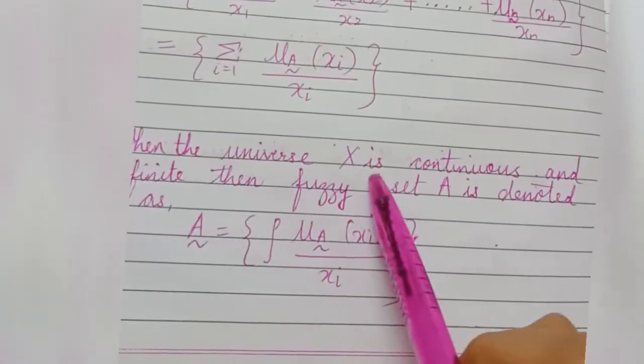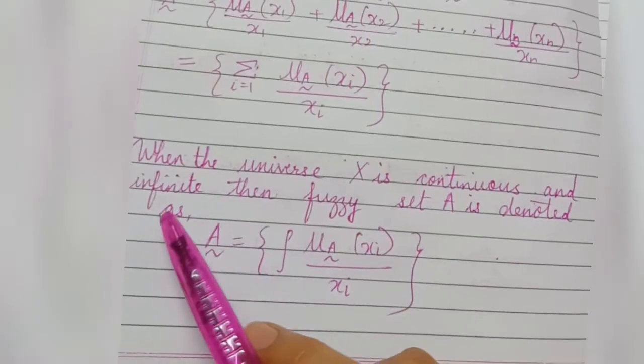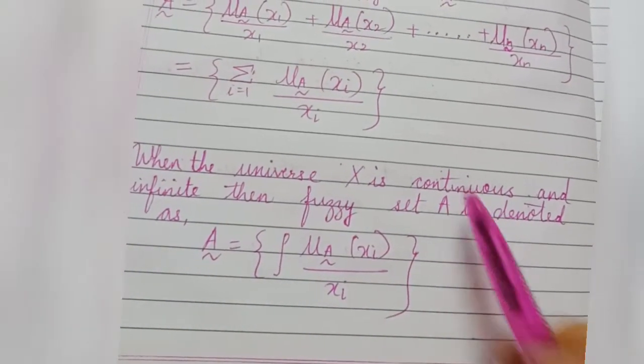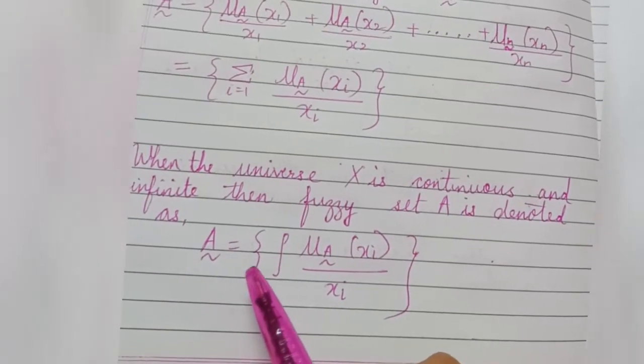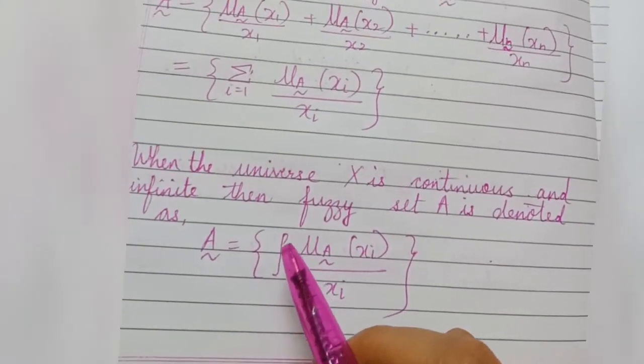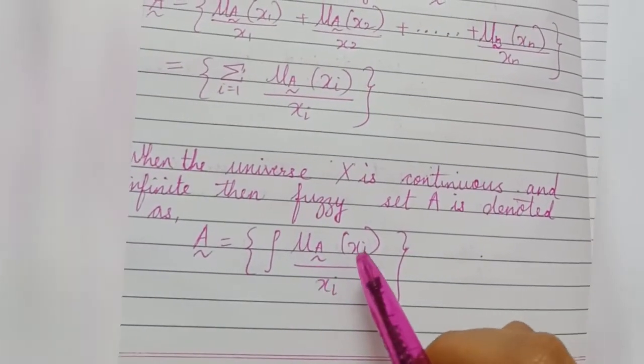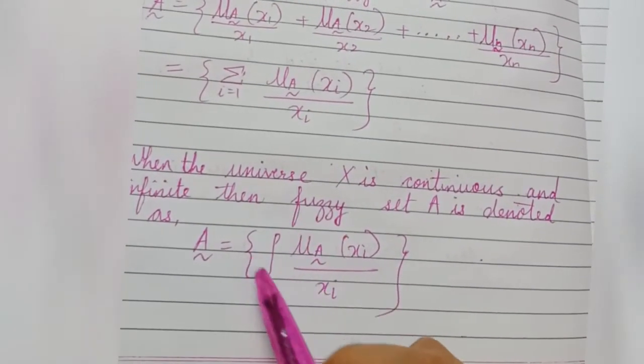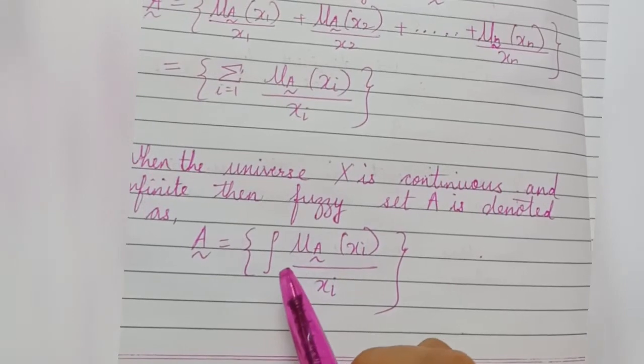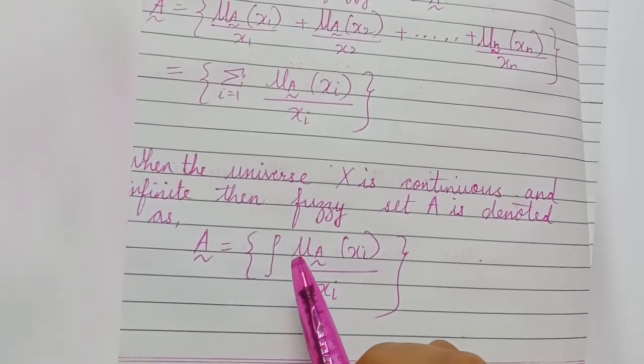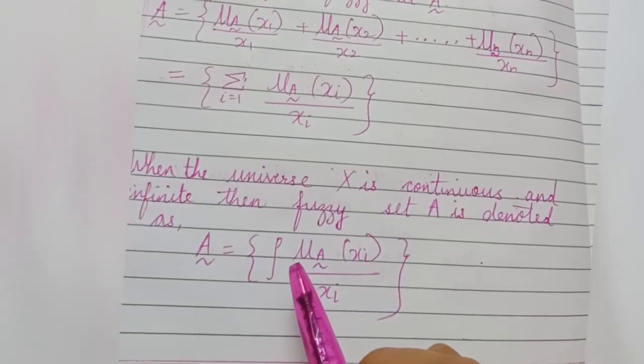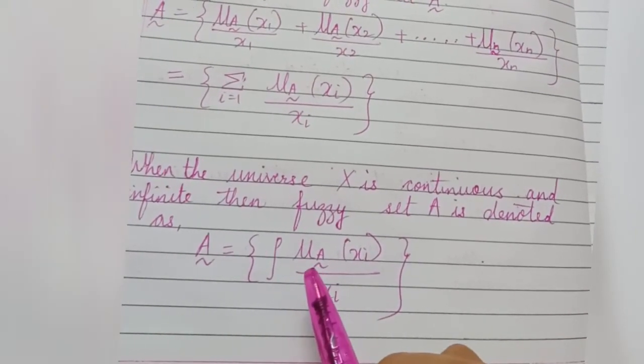When the universe X is continuous and infinite, then fuzzy set A is denoted as fuzzy set A equals, in curly brackets, integration sign μA(X)/X. Here this integral sign is not algebraic integration but it is continuous function theoretic aggregate operator for continuous variables.